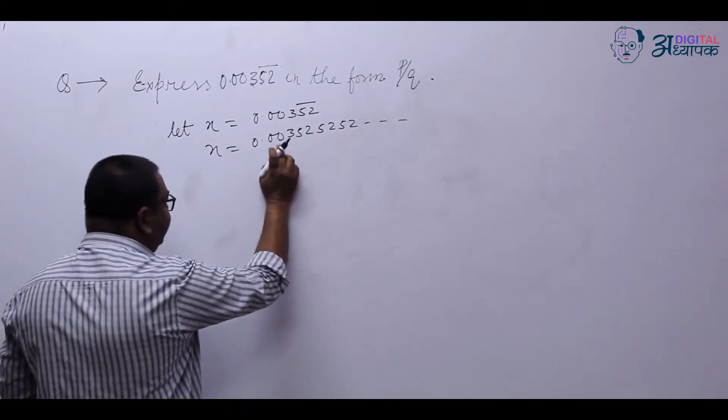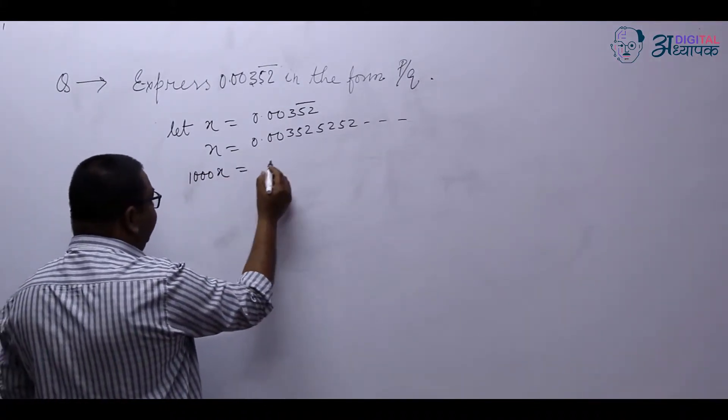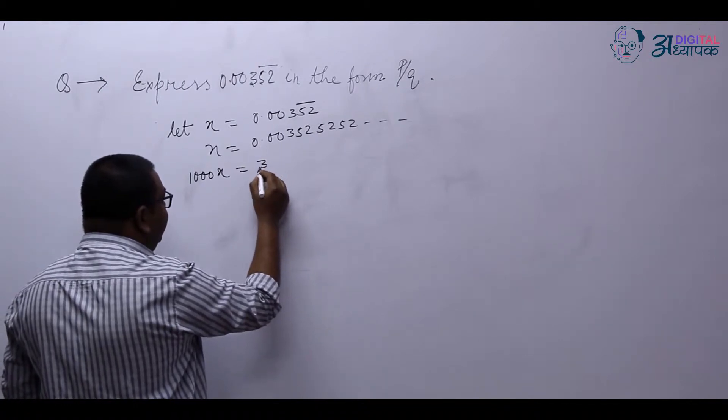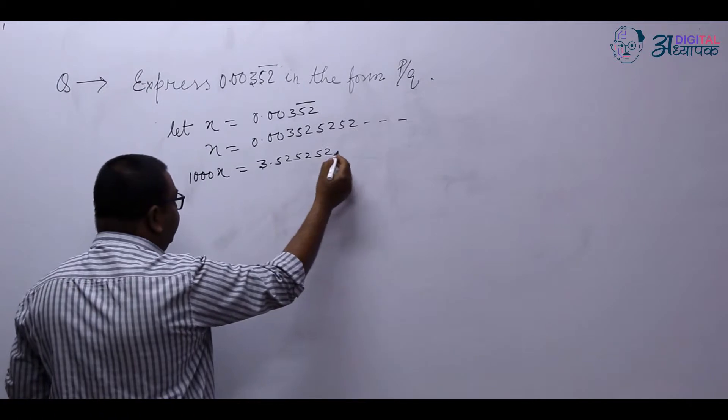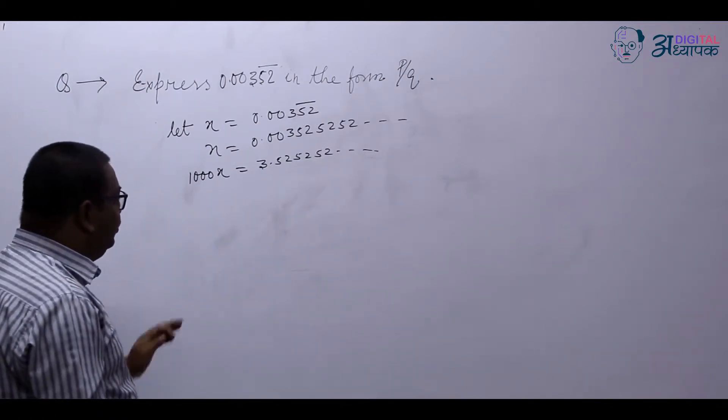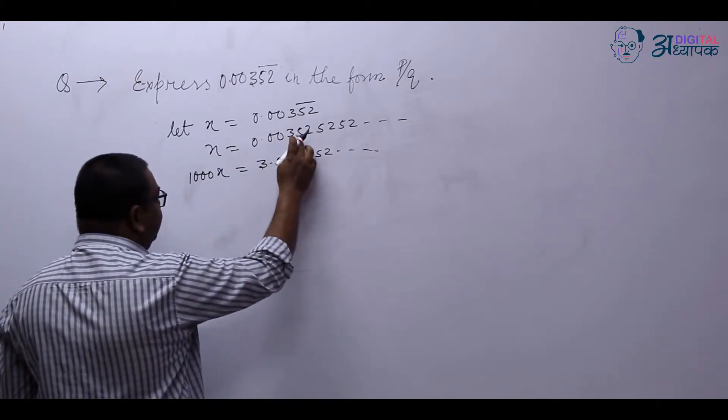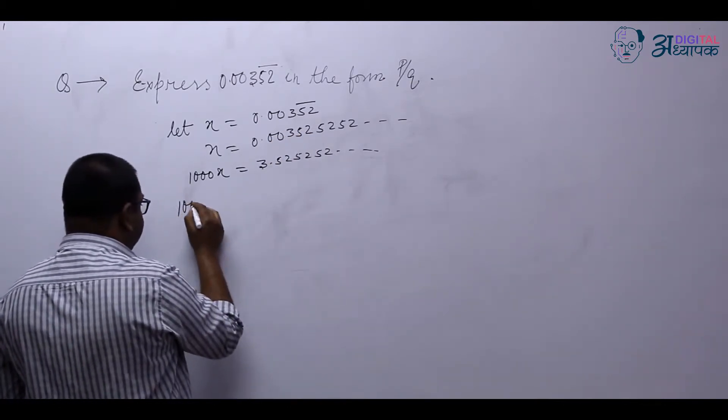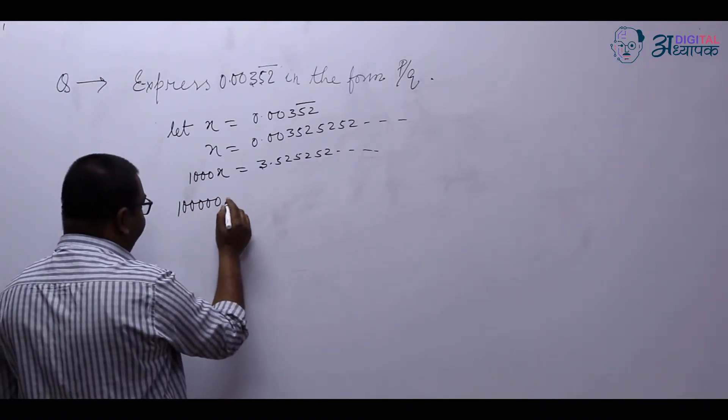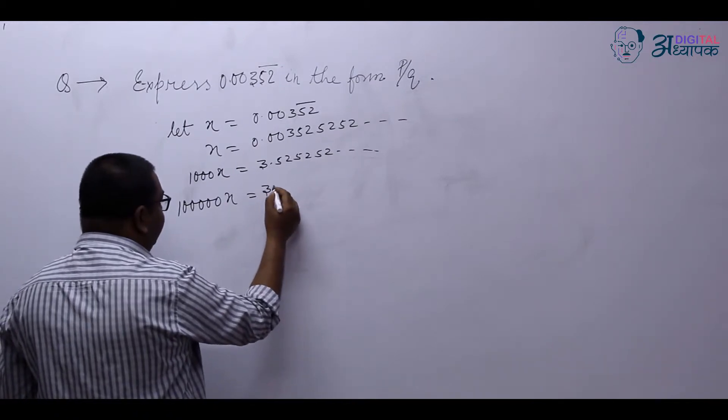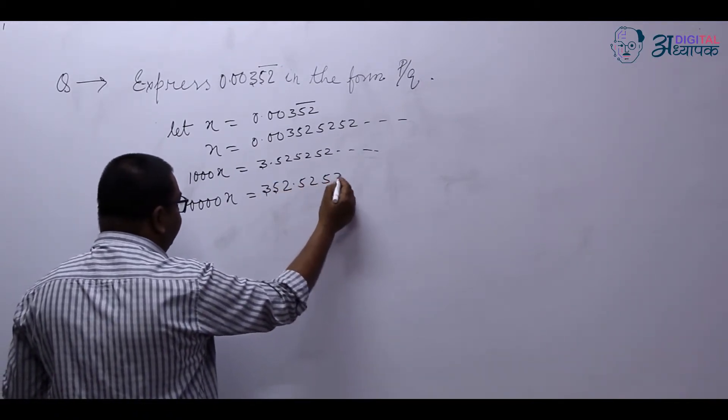First we have to shift it three places, so we will multiply it by 1000. So 1000x will become 3.525252 and so on. Now we have to shift it two more places, so we will multiply it by 100000. So 100000x equals 352.5252 and so on.